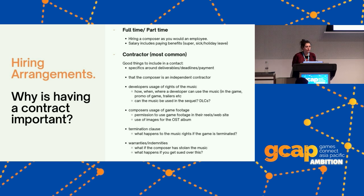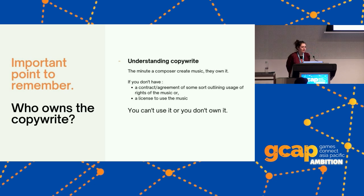Warranties and indemnities are important because composers do steal music — it does happen. If a composer has stolen music from someone else and you release the game and someone comes after you, the contract should include a statement where the composer says: I created this music, it's original work, I haven't stolen it, and I take on that responsibility. It's also important to understand that the minute a composer creates music, they own the copyright. So if you want to use it, you need a license. Without something in writing, it's hard to claim that you can use it.